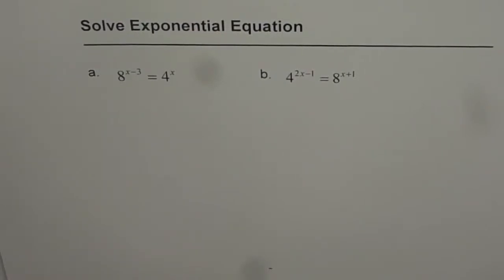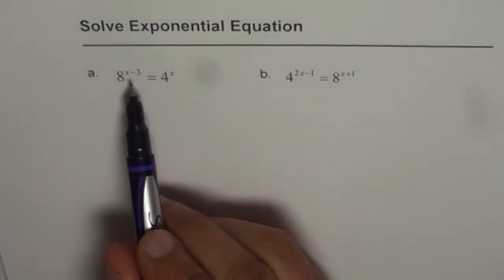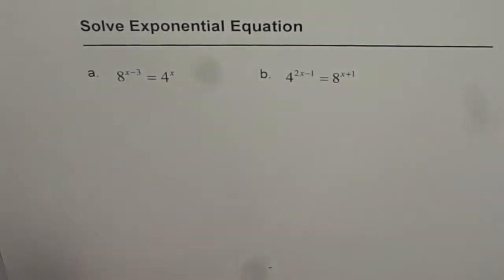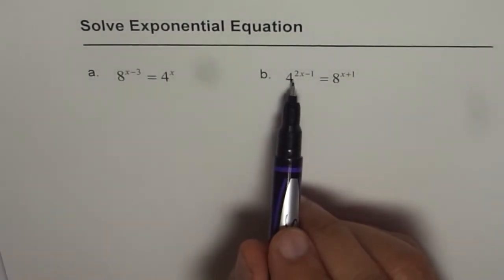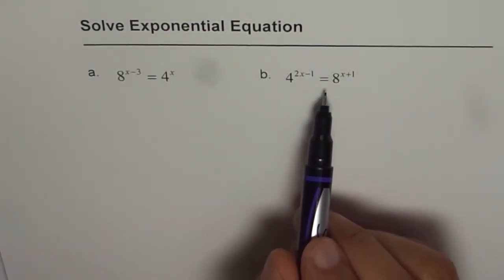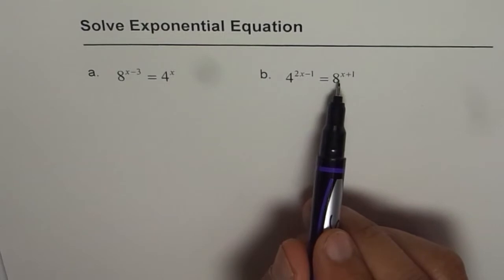Let us understand how to solve exponential equations. We have two equations here. The first one is 8 to the power of x minus 3 equals 4 to the power of x. The second one is 4 to the power of 2x minus 1 equals 8 to the power of x plus 1.